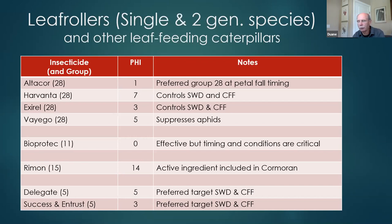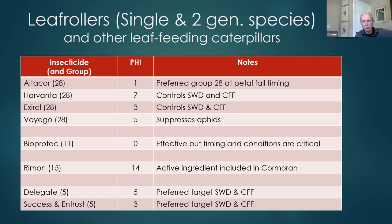Harvanta and Xrel do have later-season uses, so we try to save those for later and rely on Altacore for a petal fall spray if needed. Viego could also be used — being a new product there could be some MRL issues, but one thing mentioned on the Viego label is that it suppresses aphids, so at petal fall you may get some beneficial aphid control. Bioprotect BT has been a good material to use around block blossom time because it's non-toxic to bees.